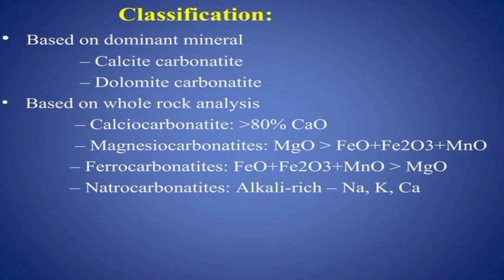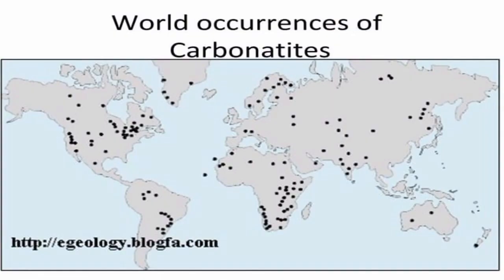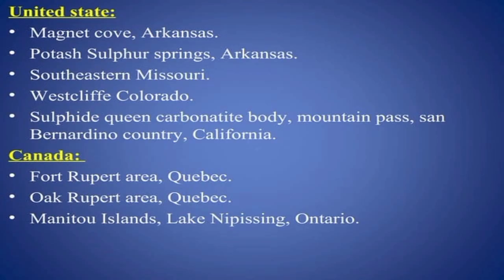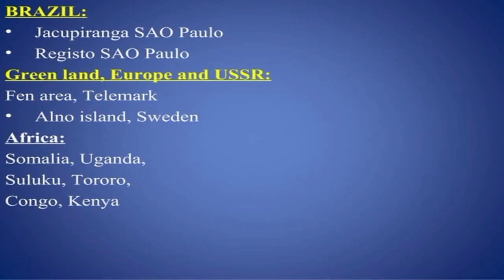Carbonatite deposits are found worldwide. In the United States, they occur at Magnet Cove, Arkansas; southeastern Missouri; and Westcliffe, Colorado. They are also found in Quebec and Ontario in Canada, and in Brazil at Jacupiranga and São Paulo. Additional deposits exist in Greenland, Europe, the USSR, and Africa.